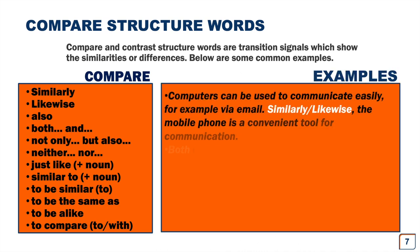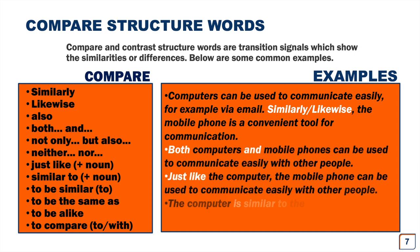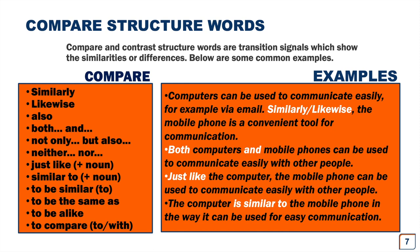Computers can be used to communicate easily, for example via email. Similarly or likewise, the mobile phone is a convenient tool for communication. Here we have similarly or likewise, so here we compare computers with mobile phones. Our second example: Both computers and mobile phones can be used to communicate easily with other people. Both and. Again, we are comparing computers and mobile phones.